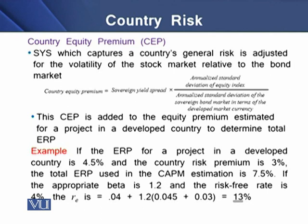The second approach is the Country Equity Premium (CEP). To determine CEP, we adjust the sovereign yield spread by the volatility of the stock market relative to the bond market. The country equity premium is therefore the ratio of stock market to bond market volatility, multiplied by the sovereign yield spread. We then add this CEP to the equity premium estimated for a project in a developed country to determine the total equity risk premium.